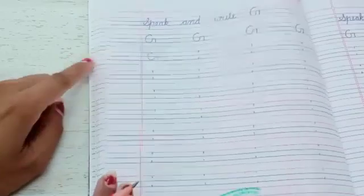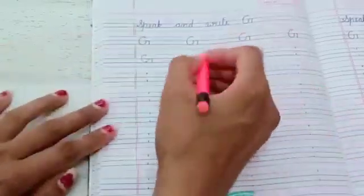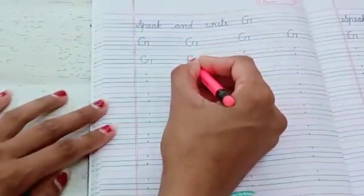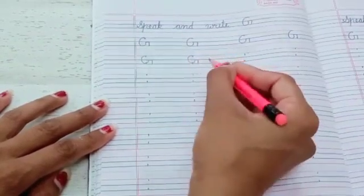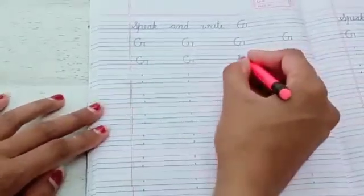This is the letter G. Again C for cat. Goes up. Sleeping line and standing line. G for grapes.